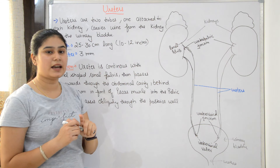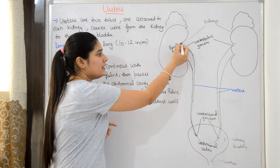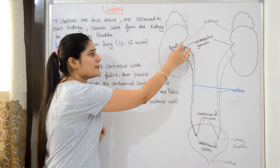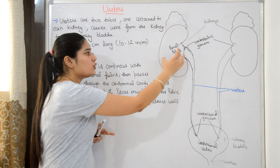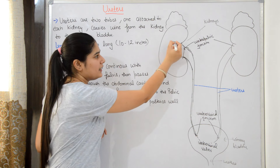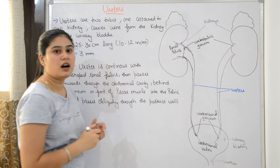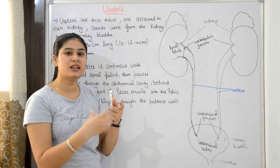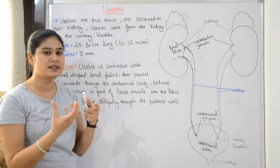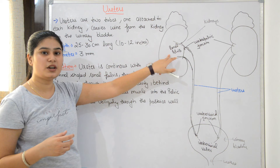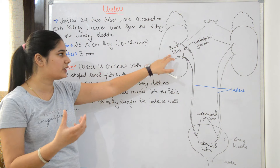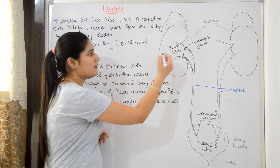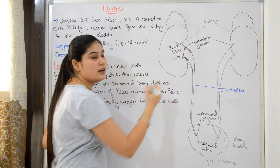The renal pelvis is a funnel-shaped structure present at the hilum of the kidney — the hilum being the point where structures enter and leave the kidney. The urine collecting pathway goes: collecting duct → minor calices → major calices → renal pelvis, and then the renal pelvis is continuous with the ureters.